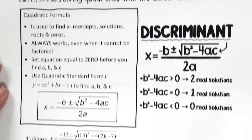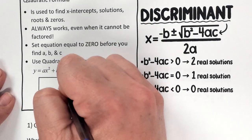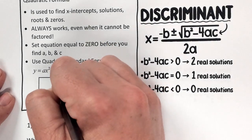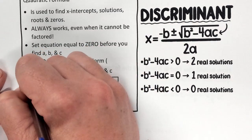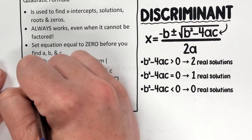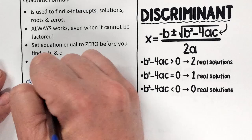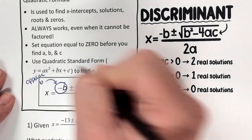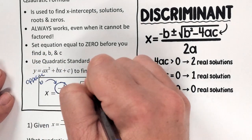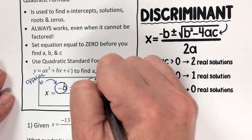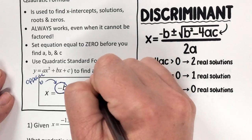One thing to realize: the formula says negative B, so it's actually the opposite of B. The other B in the formula is exact B — just B itself.